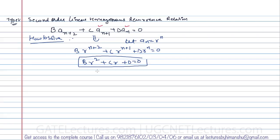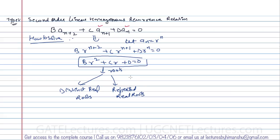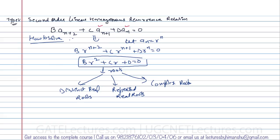It becomes a quadratic equation, and you can find its roots. The roots can be of three types: distinct real roots, repeated real roots, or complex roots. First, let us look at distinct real roots — this is Type 2, Part A.